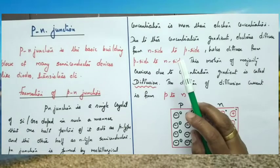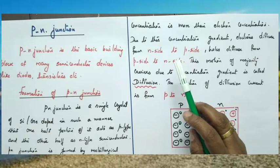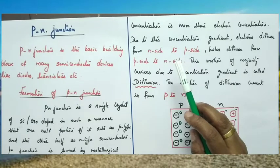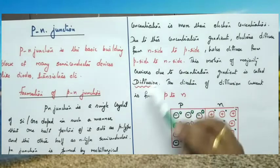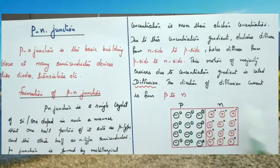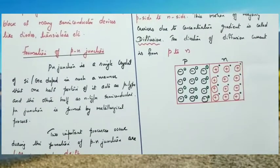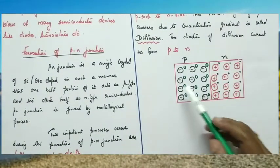Diffusion means it is the motion of majority carriers due to the concentration gradient. Now we can explain this using the figure.